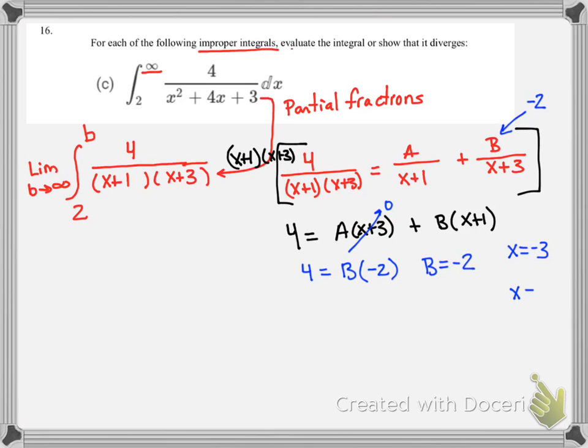And if I let x equal negative 1, then this entire factor will go to 0, and we will have 4 equals A times negative 1 plus 3 is 2. Or A is equal to a positive 2.